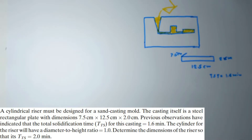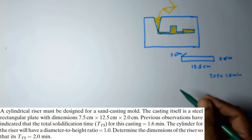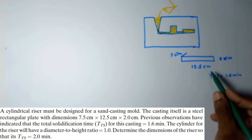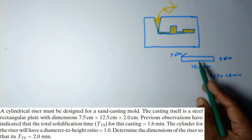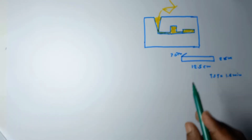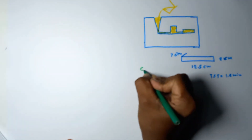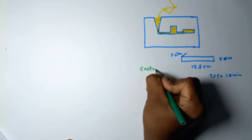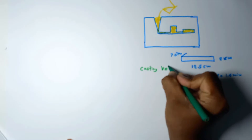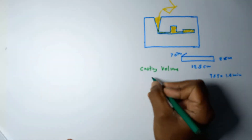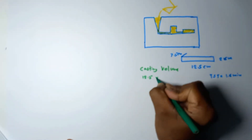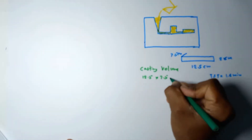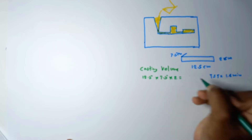So why is this data given? To find the mold constant. We are going to apply Chvorinov's rule for this one. First, before applying Chvorinov's rule, we need to find the volume and the surface area of the casting. The casting volume is equal to 12.5 × 7.5 × 2.